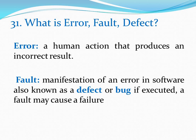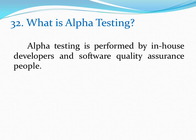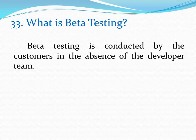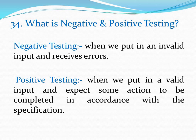What is error, fault and defect? Error: a human action that produces an incorrect result. Fault: manifestation of an error in software, also known as defect or bug; if executed, a fault may cause a failure. What is alpha testing? Alpha testing is performed by in-house developers and software quality assurance team. What is beta testing? Beta testing is conducted by customers in the absence of the development team. What is negative and positive testing? Negative testing is when we put in an invalid input and receive errors. Positive testing is when we put in a valid input and expect some action to be completed in accordance with the specification.